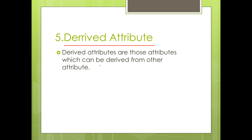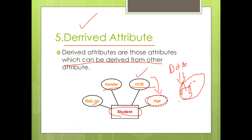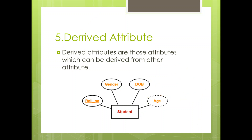What is a derived attribute? Derived attributes are those attributes which can be derived from other attributes. For example, if we have attributes roll number, gender, and date of birth, the attribute age can be derived from date of birth. Derived attributes are represented with a dashed ellipse in the ER diagram.